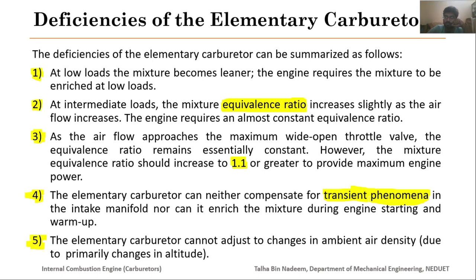There are deficiencies that need to be considered, and additional equipment needs to be installed in this elementary carburetor. The next deficiency is that the elementary carburetor cannot adjust to changes in ambient air density. As we move towards higher altitudes the air density changes, and because of that the air-fuel ratio also changes — something this elementary carburetor cannot compensate for. Altitude compensators are added to the carburetor to overcome such conditions and ensure proper combustion inside the combustion chamber.